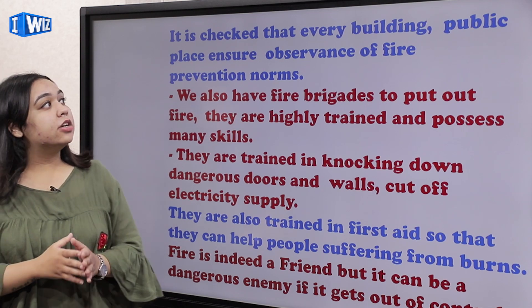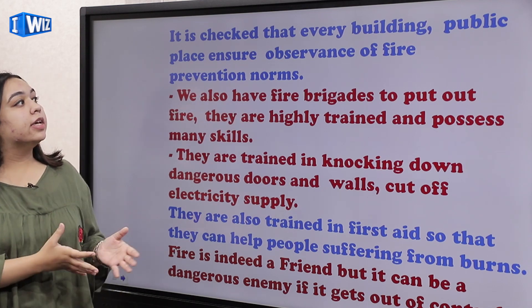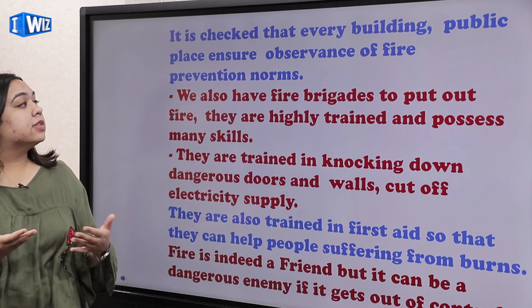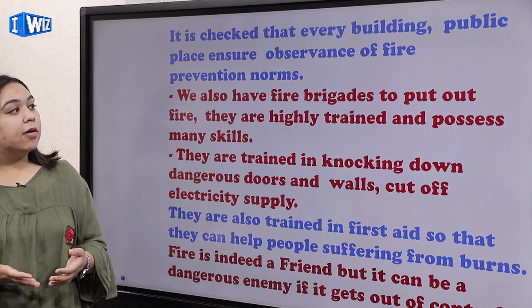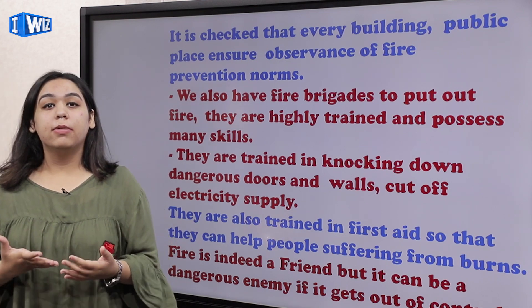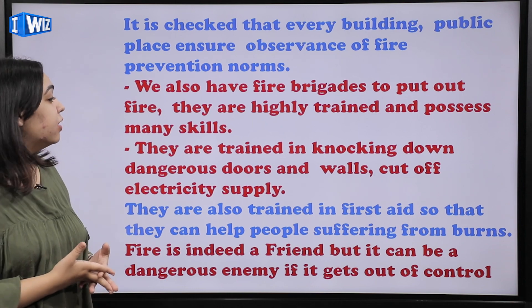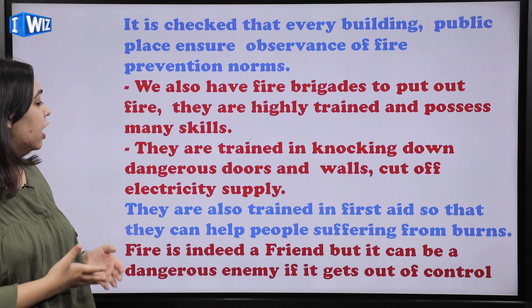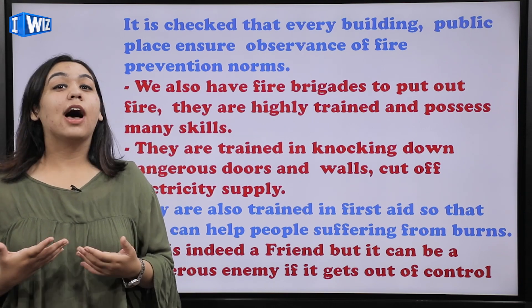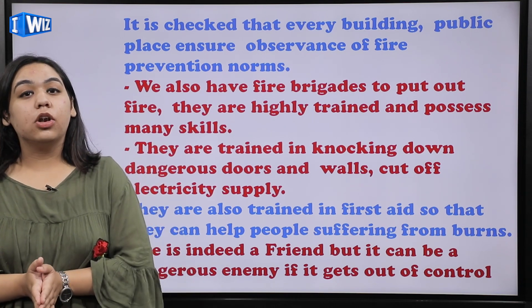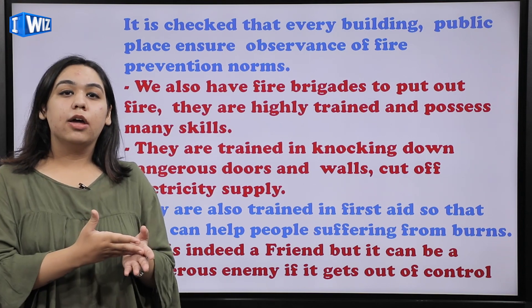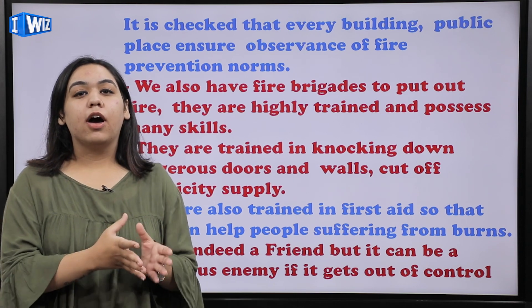It is also checked that every building and public place ensures observance of fire prevention norms. We also have fire brigades to put out fire. They are highly trained and possess many skills — they are trained in knocking down dangerous doors and walls and cutting off electricity supply. The fire brigades are trained and highly skilled, with a lot of knowledge about how to break down walls and doors in order to reach the fireplace and put down the fire.